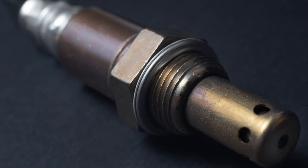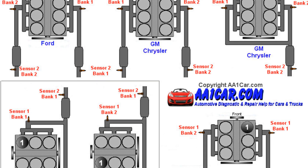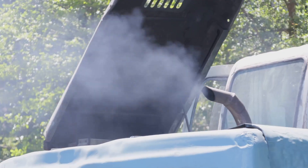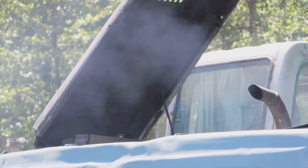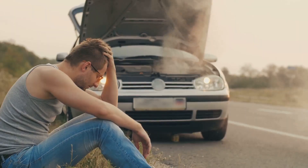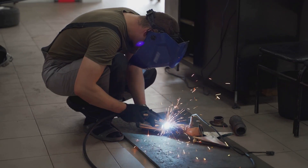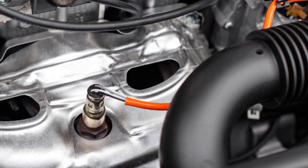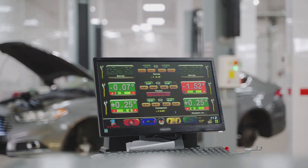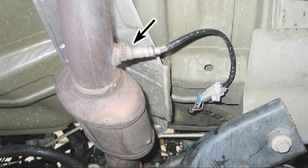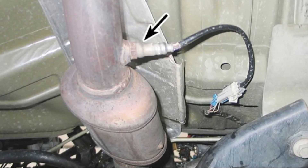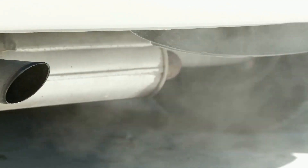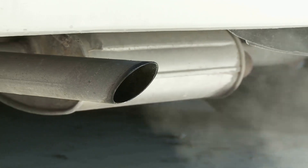Let's talk about these oxygen sensors for a minute. They're like the unsung heroes of your engine, working tirelessly behind the scenes to keep things running smoothly. Your engine needs the perfect mix of air and fuel to run efficiently — too much fuel and you're wasting gas and polluting the environment; too little fuel and your engine can misfire or even get damaged. The upstream sensor, located before the catalytic converter, tells the car's computer how much oxygen is in the exhaust to help adjust the air-fuel mixture. The downstream sensor — the one we're interested in with code P0138 — measures the oxygen content after the catalytic converter, telling us how well it's converting harmful pollutants into less harmful substances.